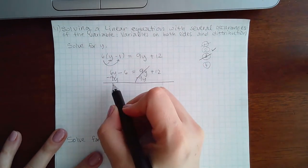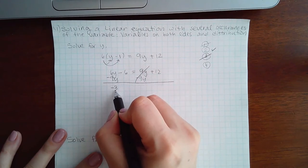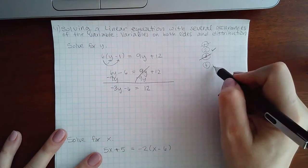That eliminates it on the right side. On the left side, I get negative 3y and a positive 12. So this step is done.